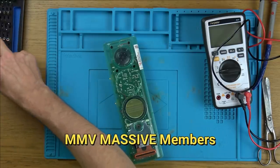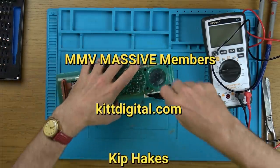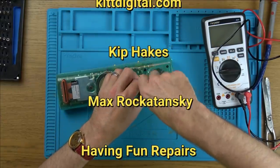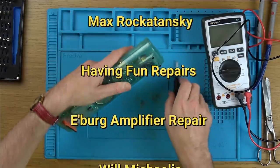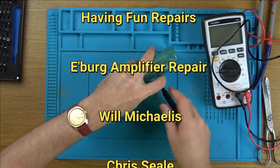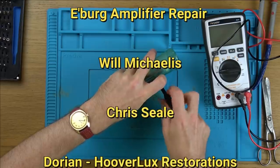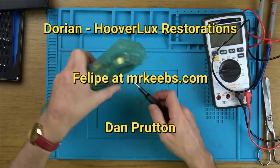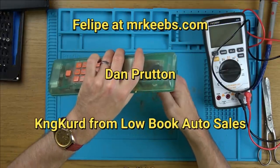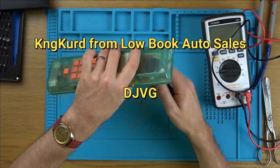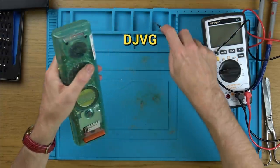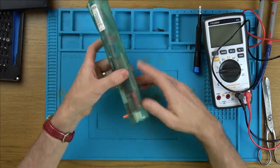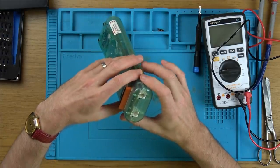So while I'm working on this, let's give a shout out to the My Mate Vince Massive, which this month is KitDigital.com, Kip Hakes, Max Rokitansky, Having Fun Repairs, Edensburg Amplifier Repair and Service, Will Michaelis, Chris Seal, Dorian from HooverLux Restorations, Philippe at MrKeebs.com, Dan Prutton, King Curd from Loadbook Auto Sales, and DJVG.